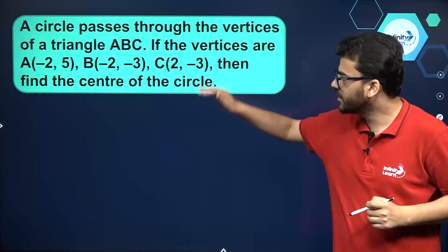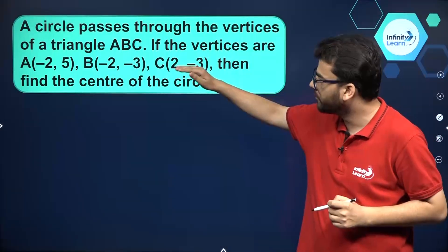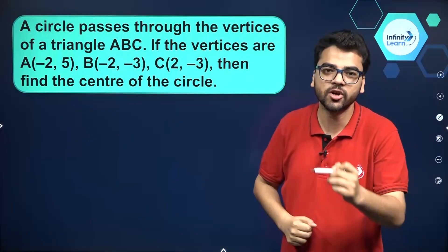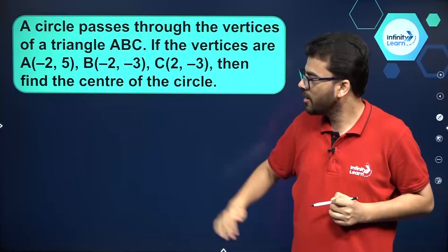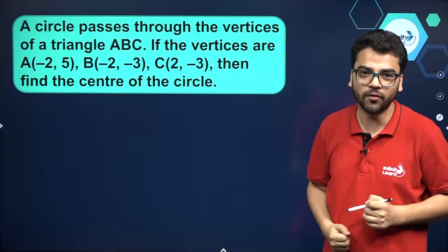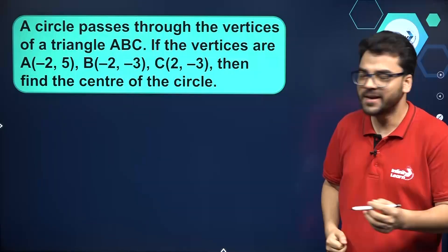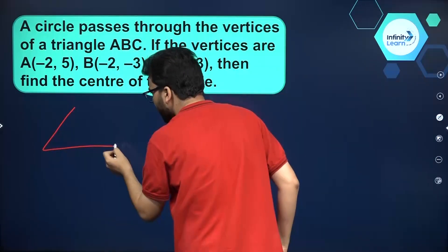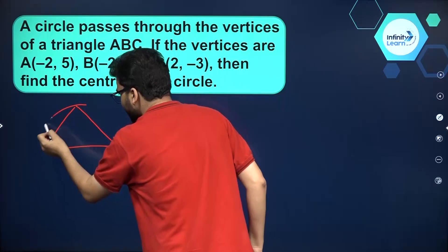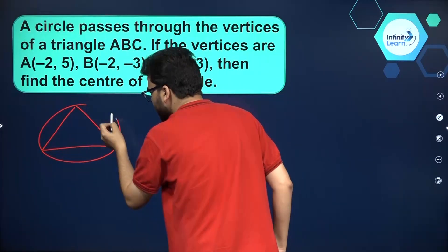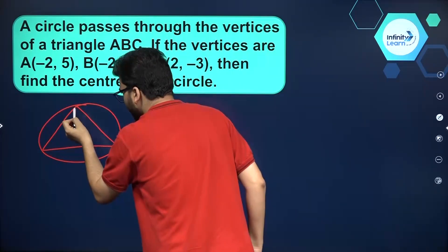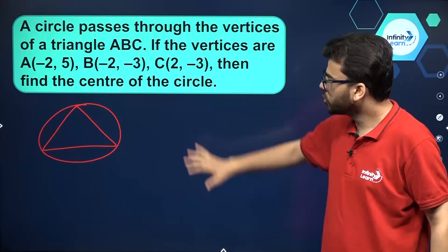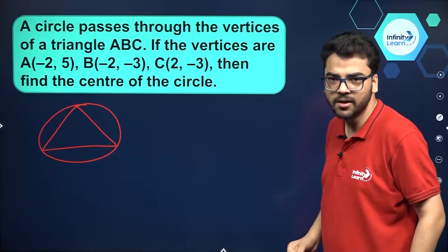We are given the vertices of a triangle and we have to find the center of a circle passing through these points. The rough figure will be something like this — a triangle with a circle passing through its three vertices.